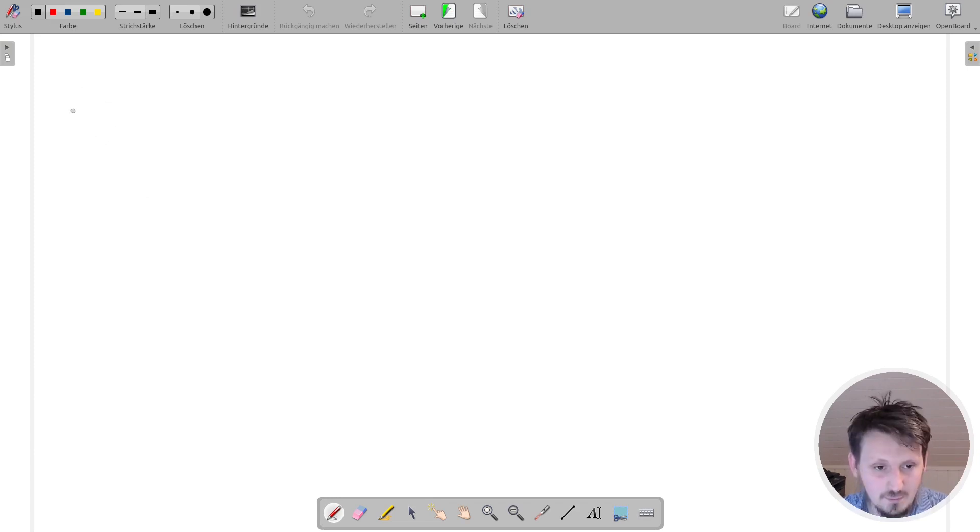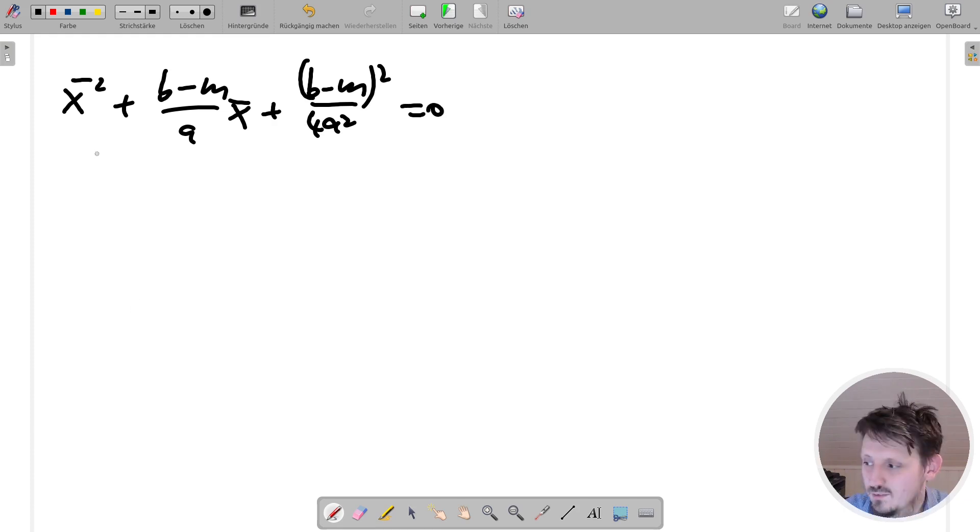And, yeah, when we add these two up, then we receive at a result as a result X bar square plus B minus M divided by A X bar plus B minus M divided by four A square. And this should be also squared, and this is equal to zero. So one of the few tricks which we have to actually use now in this whole derivation, we have to apply now here.